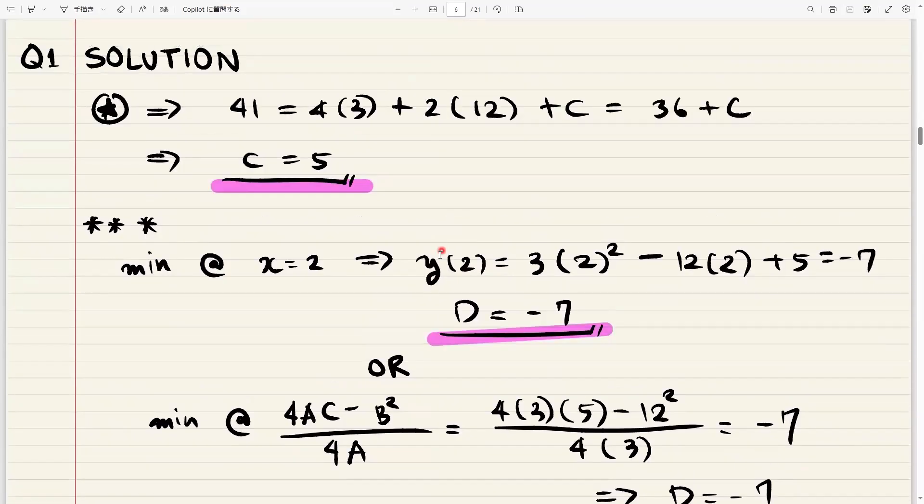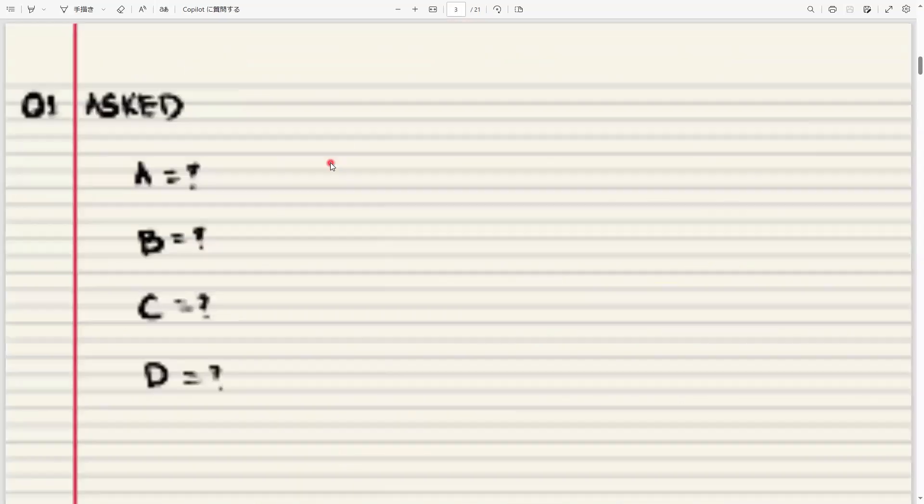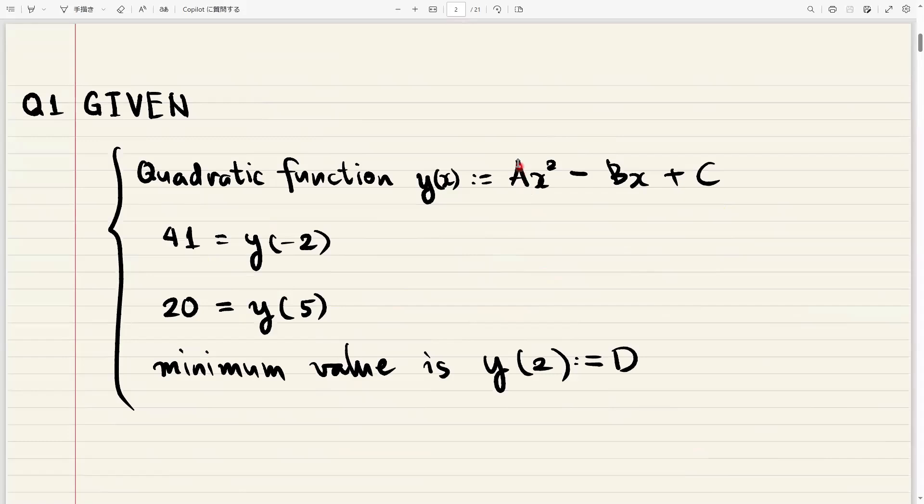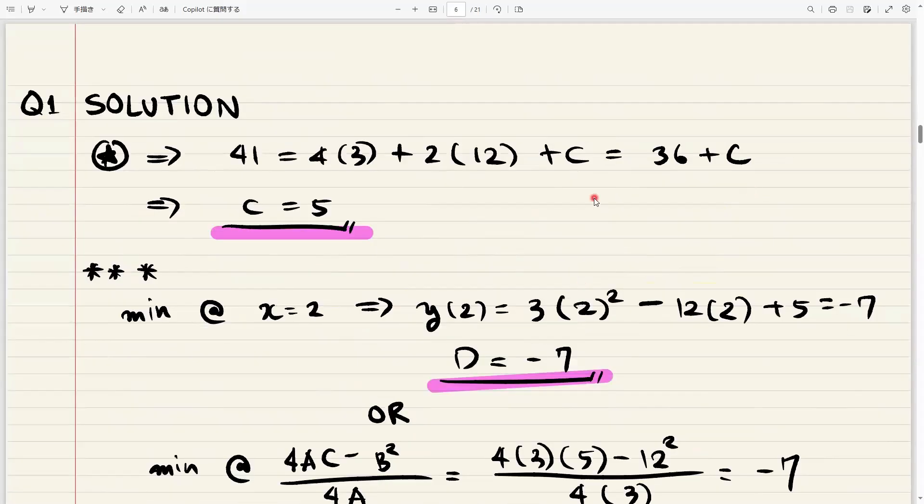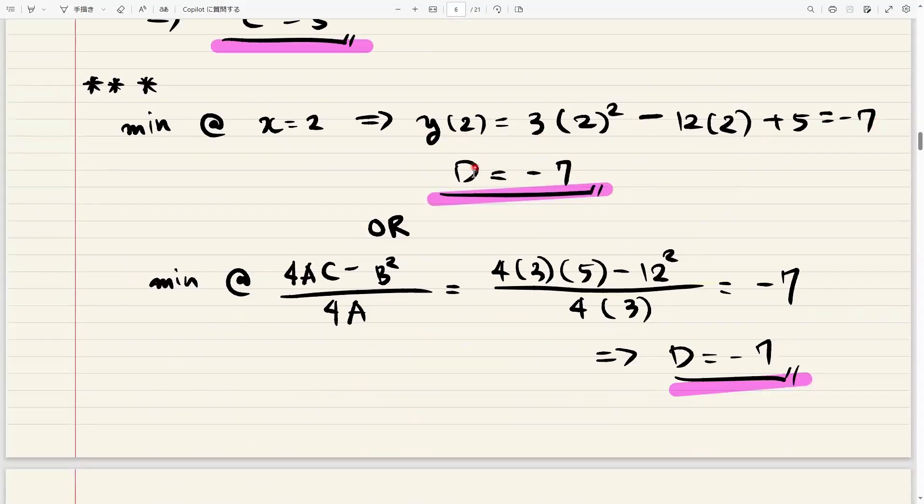However, you can also just use the function that we already know. So because we already have a and b, we will know what to put in this part. We already know a, we already know b, and we also know that this is going to be y of two in here, right? And we also know c, right? So we replace a, b, and c and x with two. And when you compute that, you do it this way. You're still going to get negative seven.